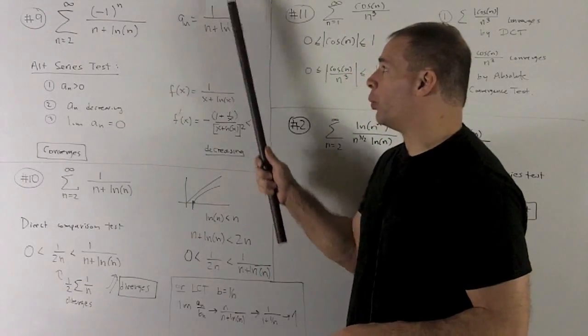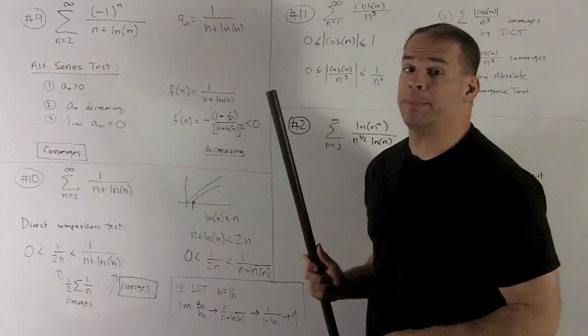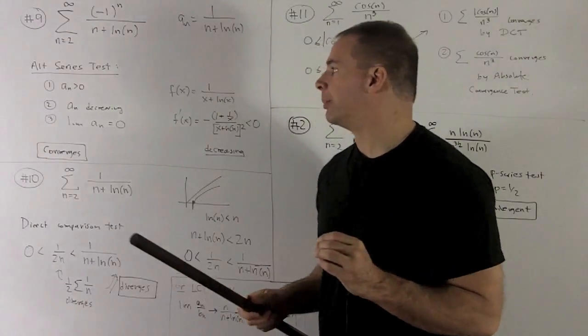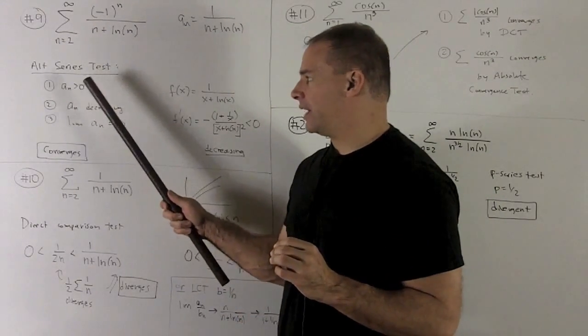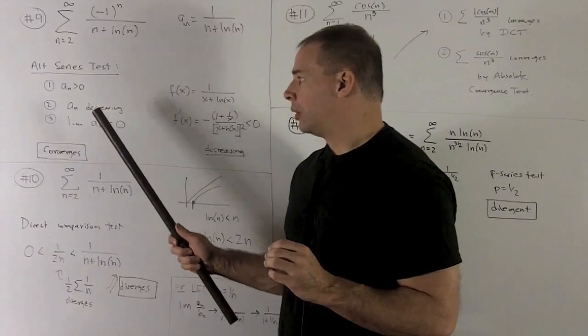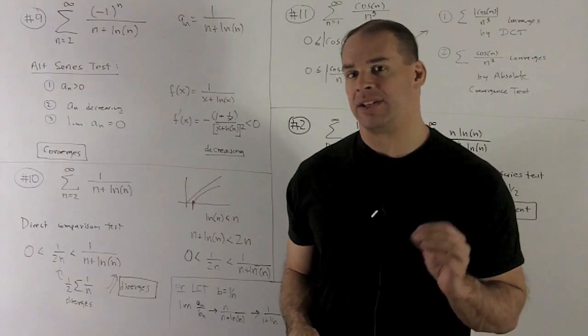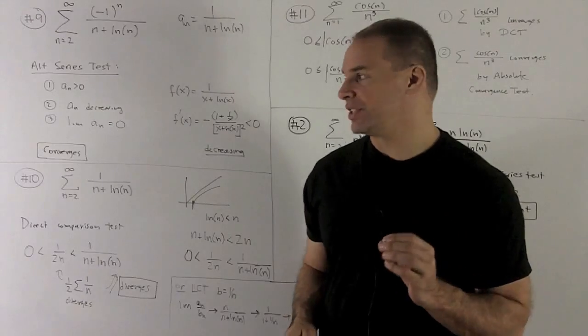Our a sub n is going to be equal to 1 over n plus natural log of n. But when we apply the alternating series test, we're going to need to show three things. First, a sub n is positive, we'll need a sub n is decreasing, and we'll need the limit of a sub n as n goes out to infinity is equal to 0.